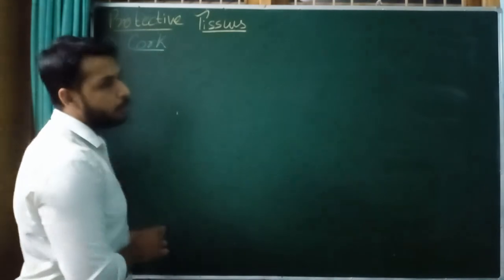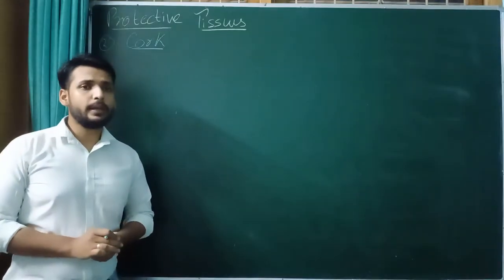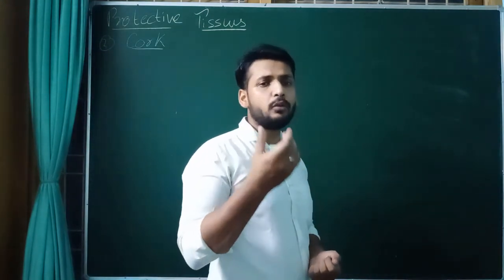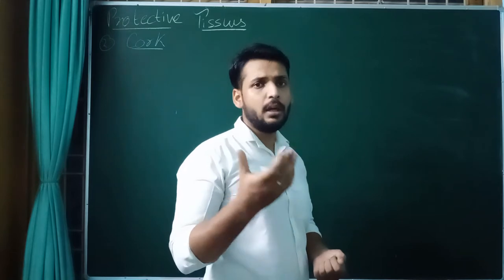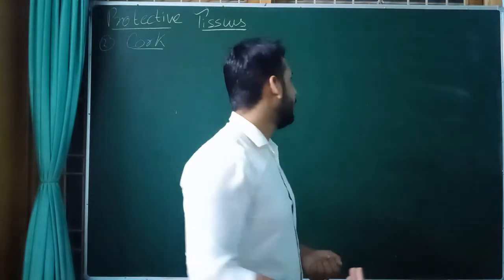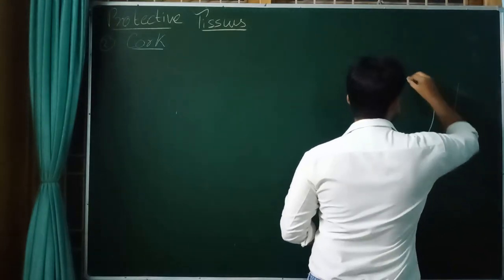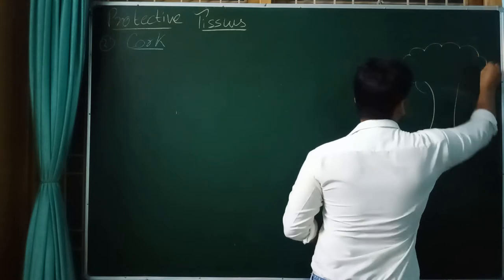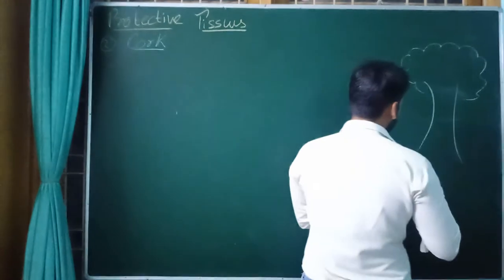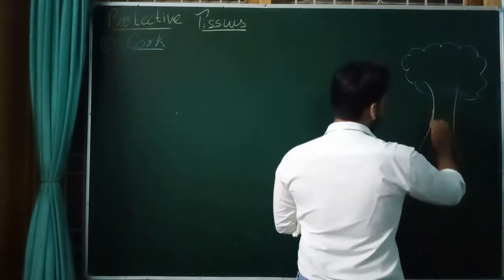Now the question arises: what is cork? Actually you can see the bark of a tree, or the outermost portion of the tree trunk, is cork. Usually it forms the cork. Here it is a tree, and here you might have seen a structure somewhat like a bark.